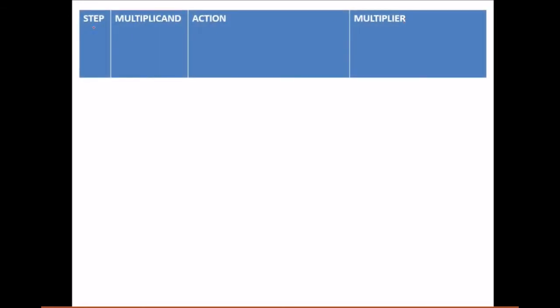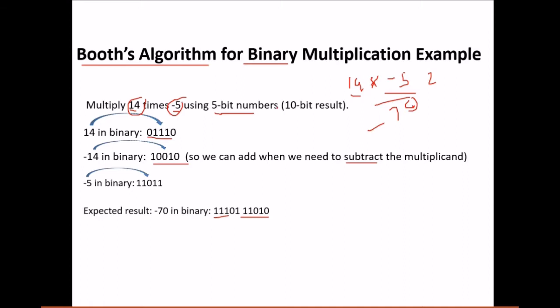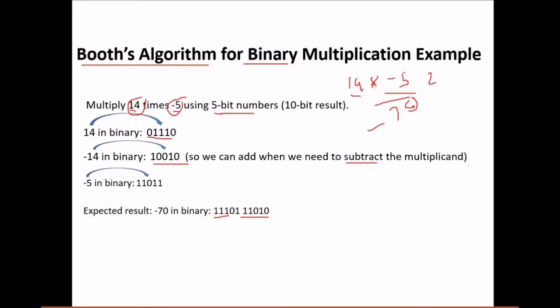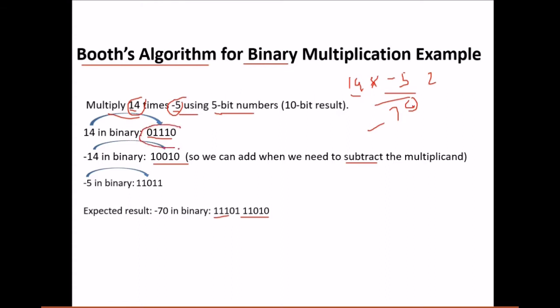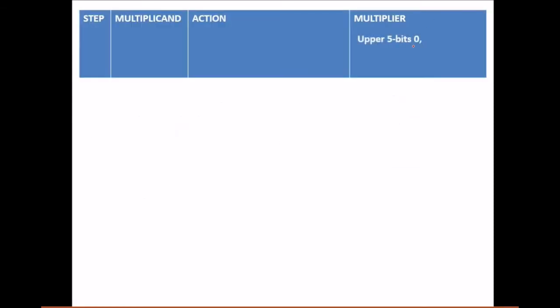We need to make a table. We write the step column, and it will go up to 5 because we have 5-bit numbers — we stop at exactly 5 steps. We have a multiplicand column and a multiplier column. In front of the multiplier we write five bits that will be zero initially; only the lower five bits will be our multiplier. We also add a Booth bit at the initialization step, initialized to zero.